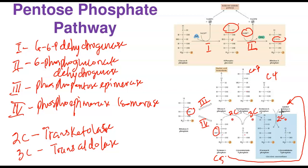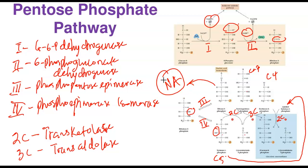The pentose phosphate pathway is important for two main reasons: first, it generates the reducing equivalent NADPH needed for reductive anabolic or synthetic pathways; and second, it furnishes important intermediate products — ribose sugars needed for nucleic acids, and glycolytic intermediates like glyceraldehyde-3-phosphate and fructose-6-phosphate needed for glycolysis. Thank you for listening, we'll stop here — enjoy the rest of your day.